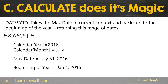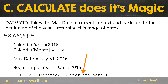That's by default — keep in mind you can change that using the second optional parameter in DATESYTD. So if you want the year-end to be, say, January 31st so that the beginning of the year is February 1st, you could do that using this parameter.